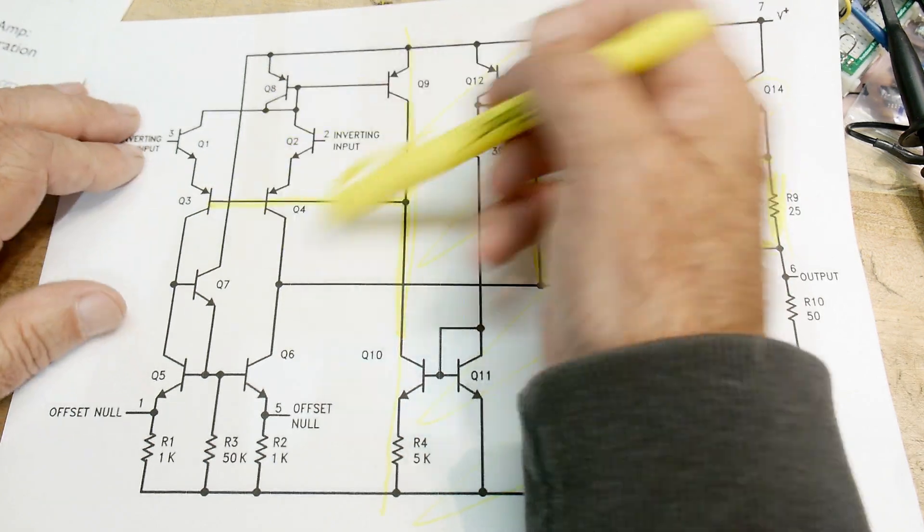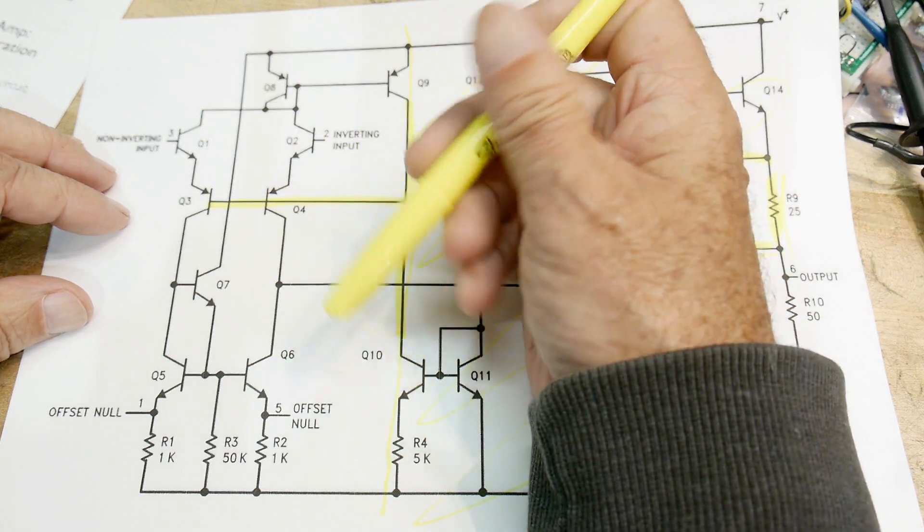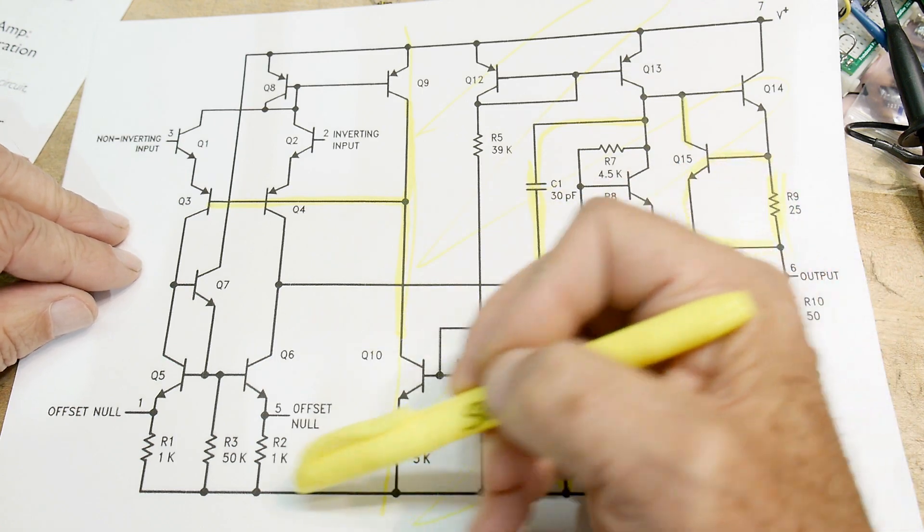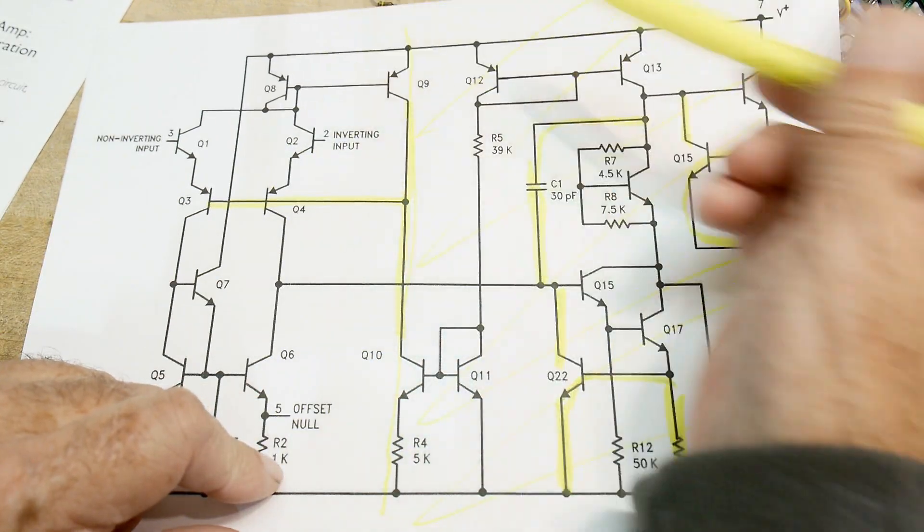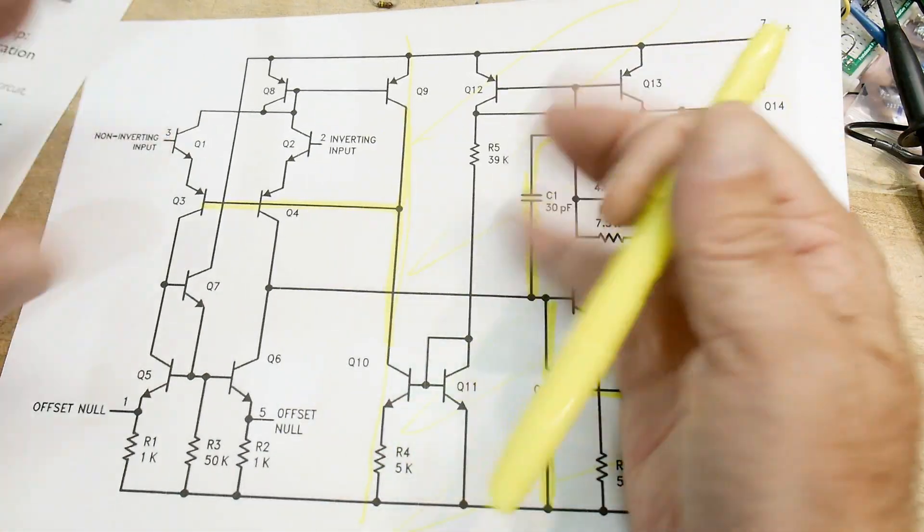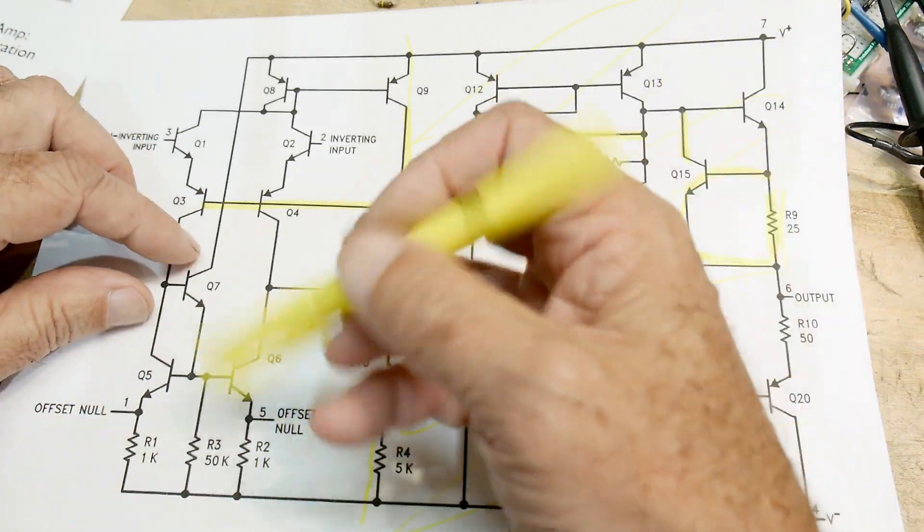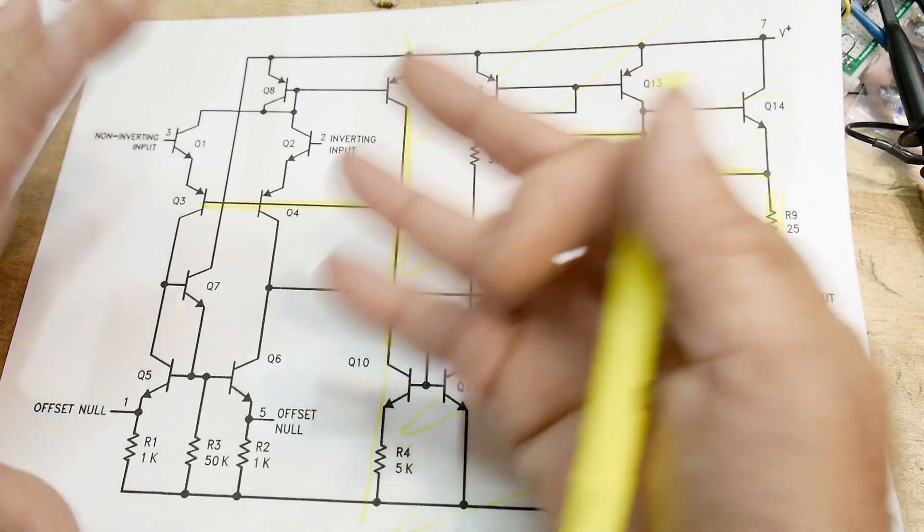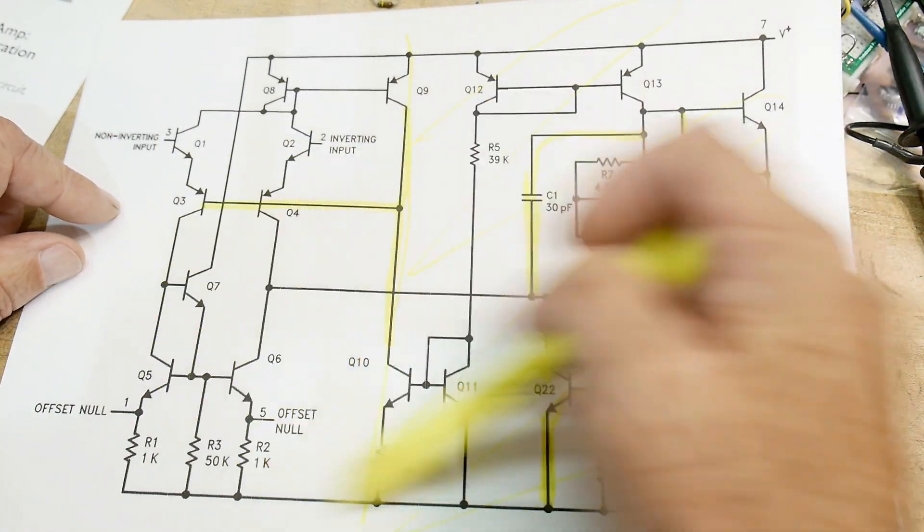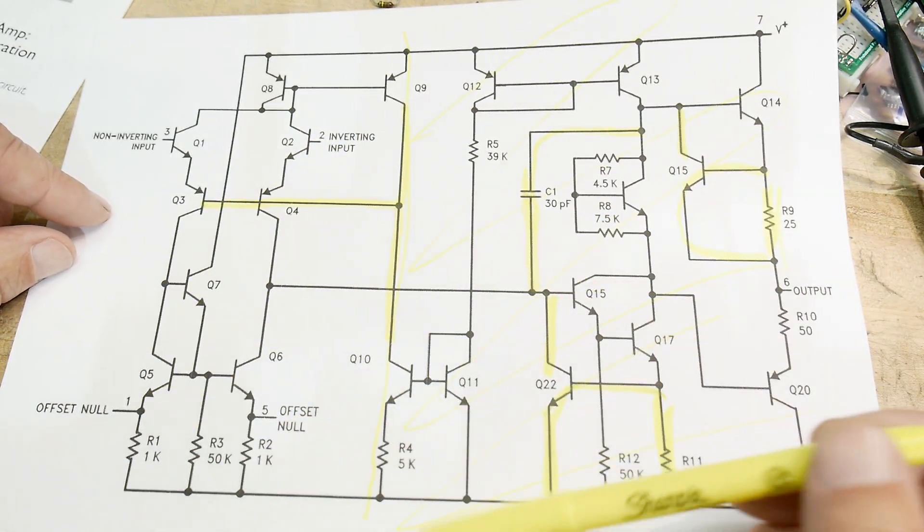It allows this thing to work within a certain range. I think a 741 can operate within three volts of the rails. I think that's correct. I think you need to be three volts above the negative and three volts below the positive. It's not a great part. It's a very old part. Most op amps will operate to maybe two diode drops from the top and two diode drops from the bottom. Something like that. This one's a little bit more limited.